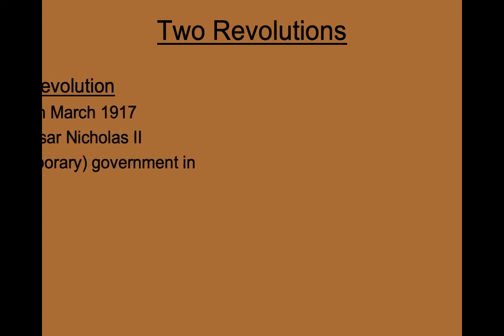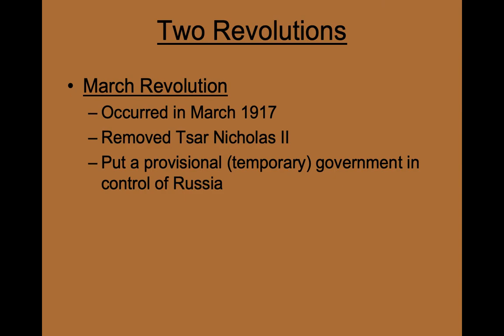The Russian Revolution was actually two separate revolutions that occurred throughout the year 1917. The first part of the revolution is known as the March Revolution. It occurred between late February and early March of 1917 and removed the Tsar who had been ruling Russia for most of the early 1900s.